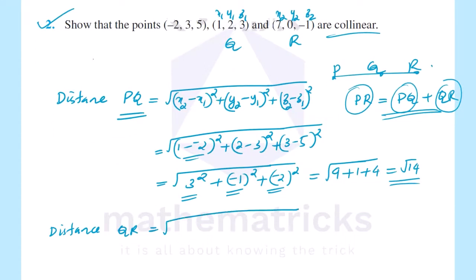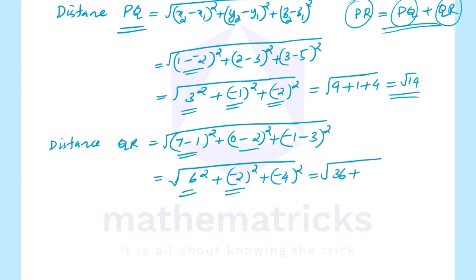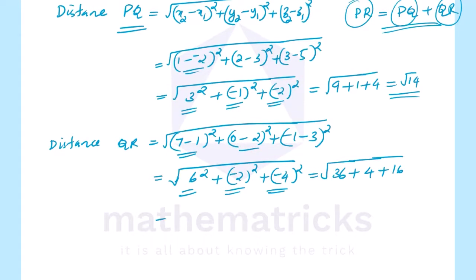QR equals square root of (x2 minus x1) equals 7 minus 1, all square; plus (y2 minus y1) equals 0 minus 2, all square; plus (z2 minus z1) equals minus 1 minus 3, all square. That is square root of 6 squared, which is 36; plus minus 2 all square, which is 4; plus minus 4 all square, which is 16. Equal to root of 36 plus 4 plus 16, equal to root 56. Factorizing: root 56 equals square root of 2 into 2 into 2 into 7, that is 2 root 14.